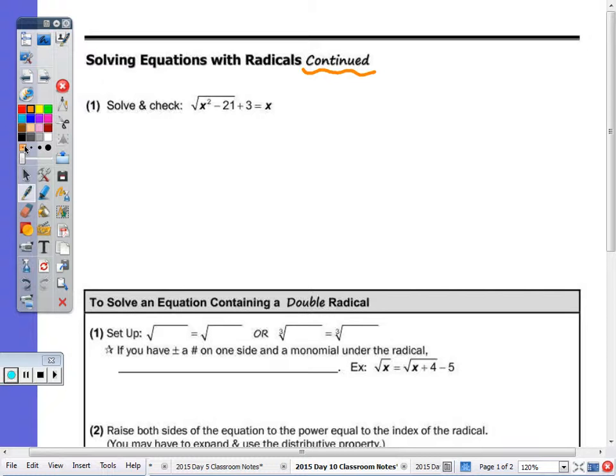Get it by itself. So I have to start by subtracting the three. Once you isolate the radical, then you can raise it to the power of the index. If it's a square root, we square it.